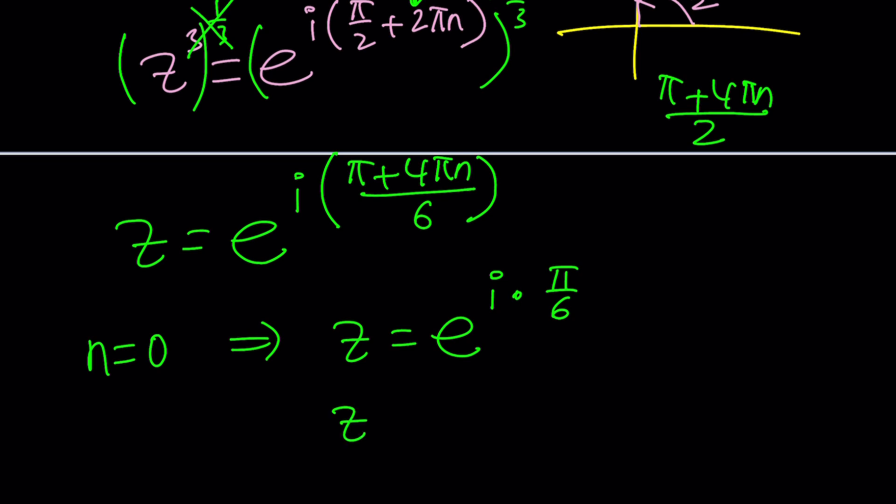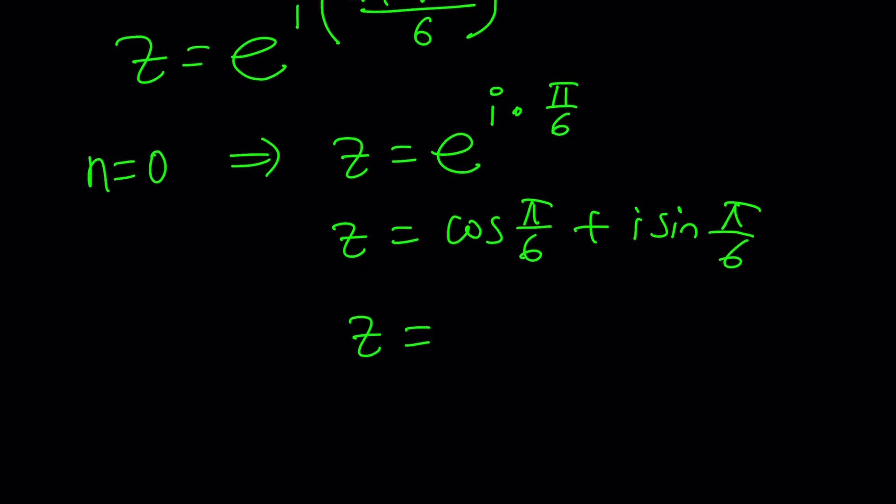Let's just replace n with 0. We get z = e^(i·π/6). Now, π/6 is 30 degrees. This is cos(π/6) + i·sin(π/6). And as you know, cosine π/6 is... it's the other way around. Come on. What are you talking about? So this should be √3/2 and this should be 1/2·i, which again agrees with what we found.